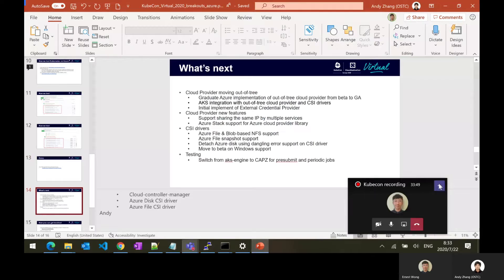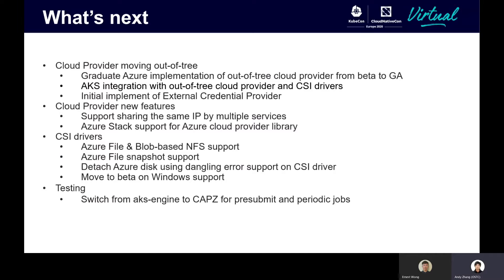Here is our future plan. We're still working on the cloud provider moving out of tree — it's now in beta and we're working to make it GA. We're also working on AKS integration with the out-of-tree cloud provider and CSI drivers, and working on the first version of external credential provider for Azure. We're also working on new Azure cloud provider features, for example supporting sharing the same IP by multiple services, and Azure Stack support. For the CSI driver part, we'll support blob-based NFS service too, Azure File snapshot, detached disk using dangling error support on CSI driver, and Windows CSI support will move to beta. For testing, we'll switch from AKS Engine to CAPZ for pre-submit and periodic test jobs.